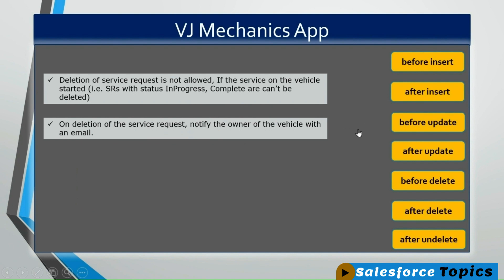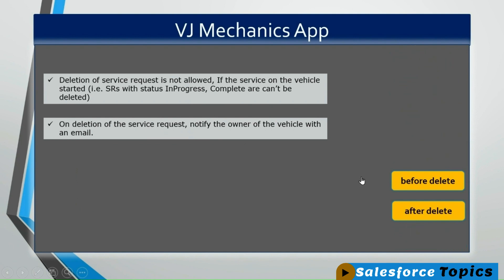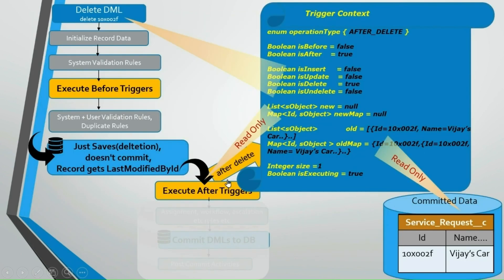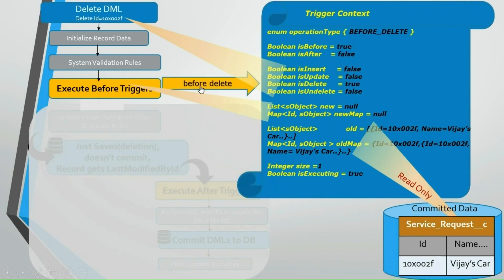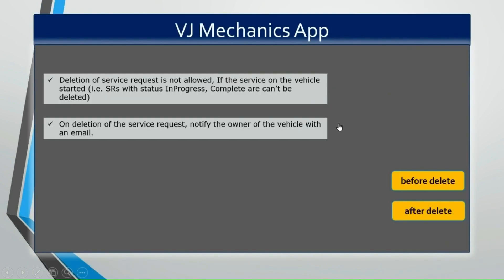These two requirements talk about the deletion of the record, so we can filter out other trigger events. Now we have only two trigger events: before delete and after delete. The first requirement talks about blocking the deletion. For this we cannot take after delete, because the record would have already been marked for deletion. If you go for before delete, you can block the transaction and roll it back easily. Hence for the first requirement, the perfect trigger event is before delete.